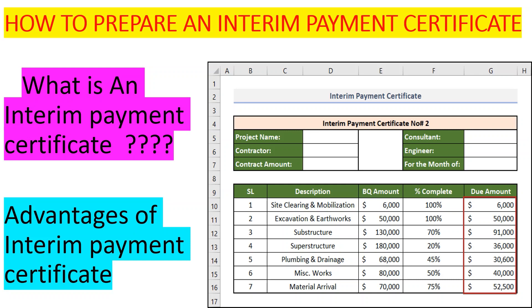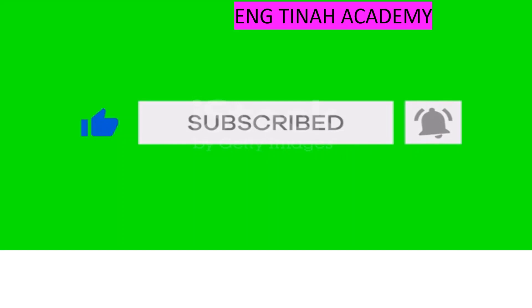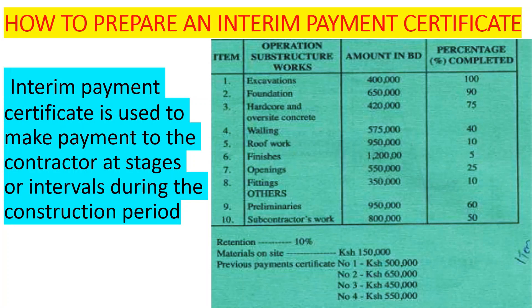We are going to use data that we've been provided to see how we prepare that interim certificate. If you are new to this channel, don't forget to subscribe, like, and leave a comment. We have data here with items, operations, amount, and percentage completion — this is what will guide us in preparing the interim certificate number five, because payments have already been made for certificates one, two, three, and four.